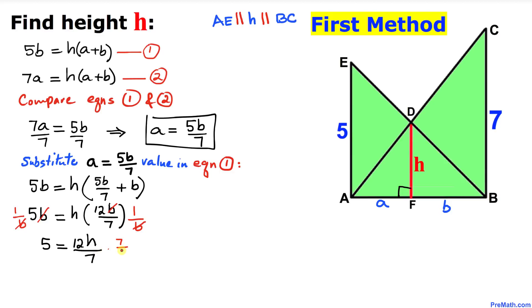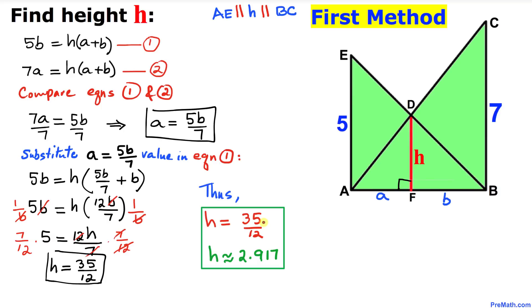The 7s cancel, the 12s cancel, so we simply get our H value is 5 times 7, which is 35 divided by 12. So this is our H value. Thus our H value turns out to be 35 divided by 12, or approximately 2.917.